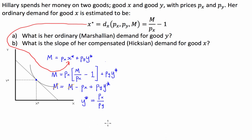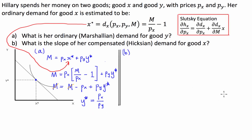That makes sense for a normal good: as the price of the other good goes up, demand for good Y will go up because we substitute back towards Y. And as the price of good Y goes up, demand will go down — they're inversely correlated — hence the price of Y is in the denominator. That's part A done; on to part B, which asks us to find the slope of her compensated demand for good X.